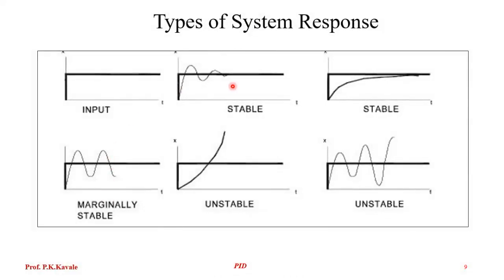Regarding types of system response, we consider a step input. All stable systems will have a dynamic response with some oscillations; due to damping, they reach the set value. This is the expected behavior — the system should be designed this way. But if a system is not properly designed, there may be instability. An unstable system will not reach the desired value.